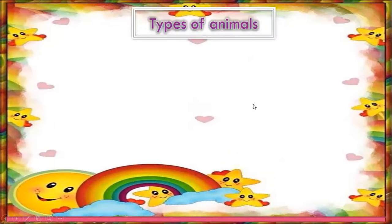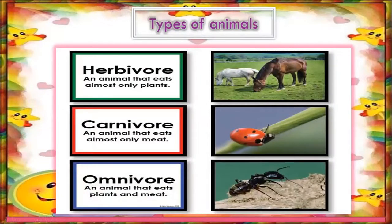Types of animals: in this chapter we discussed herbivores, carnivores, and omnivores. Some animals eat only plants, like horse, zebra, and rabbit. Animals that eat only green plants are called herbivores. Carnivores are animals that eat the meat and flesh of other animals, like lions and tigers. They have special teeth and sharp claws that help them grip and tear the flesh of other animals.